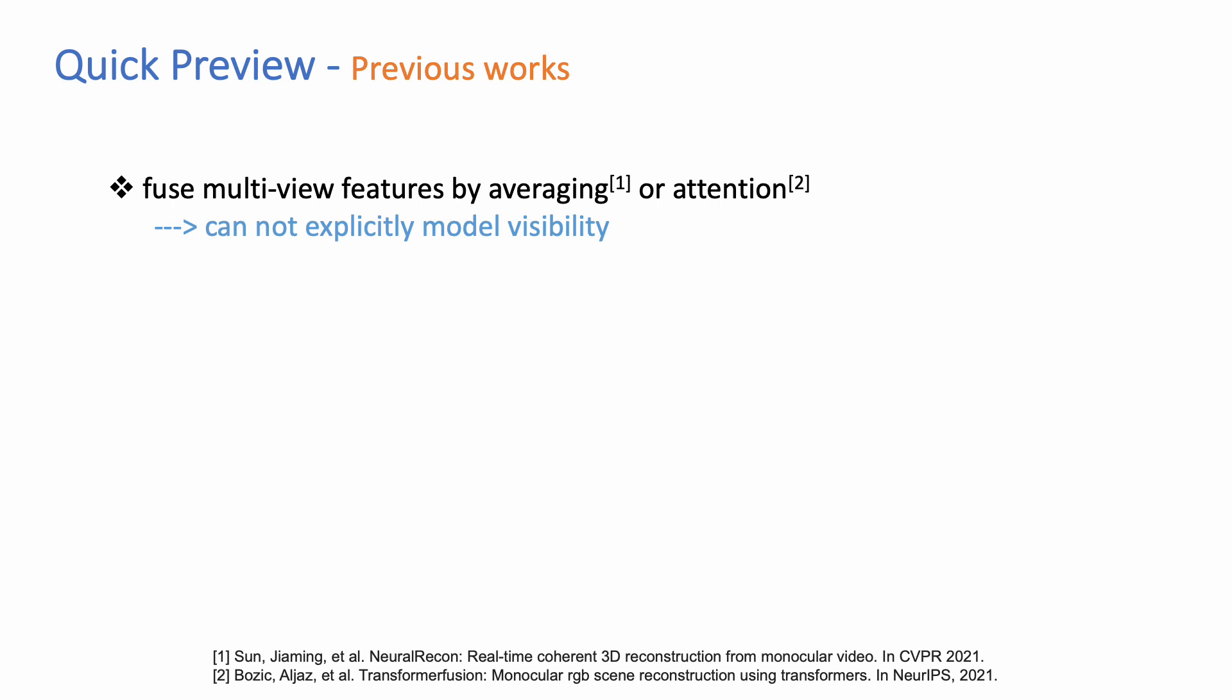Previous methods fuse multi-view features either by averaging or attention, which cannot explicitly model the visibility. In addition, they sparsify the volume with a fixed threshold that tends to remove scene structures at coarse layer.